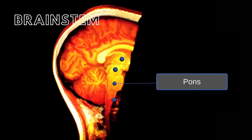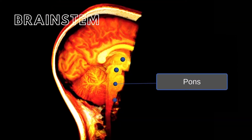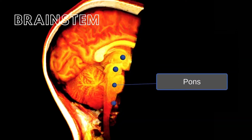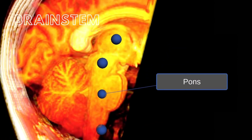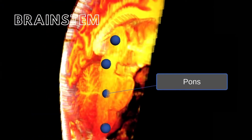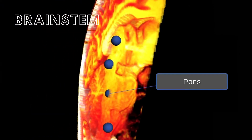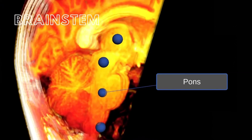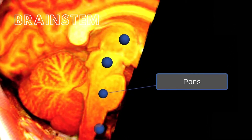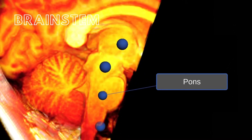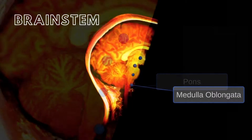The pons contains ascending, descending, and transverse sensory and motor tracks, and also contains motor and sensory nuclei for cranial nerves 5, 6, 7, and 8.